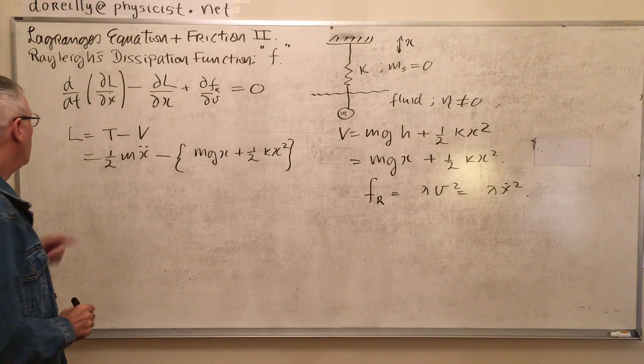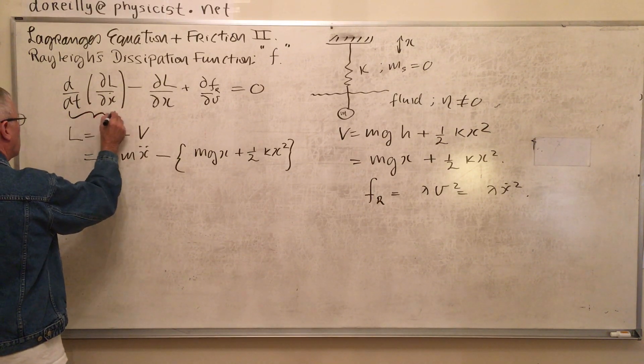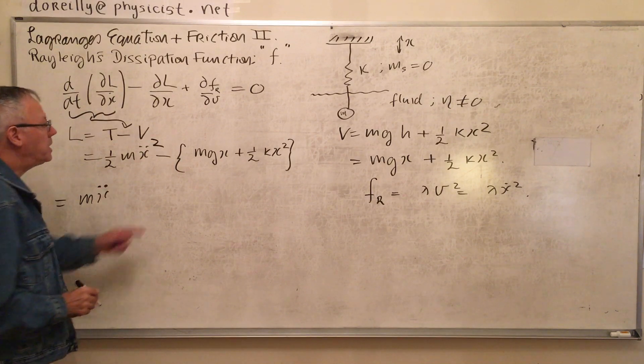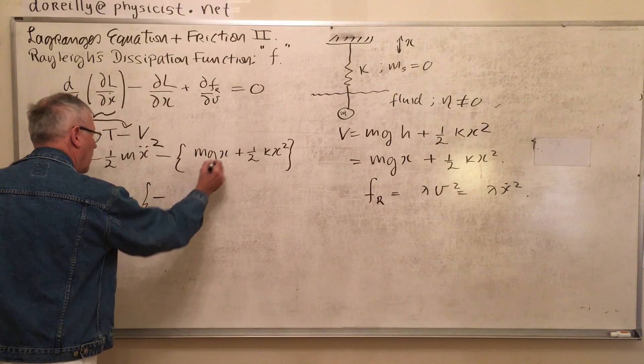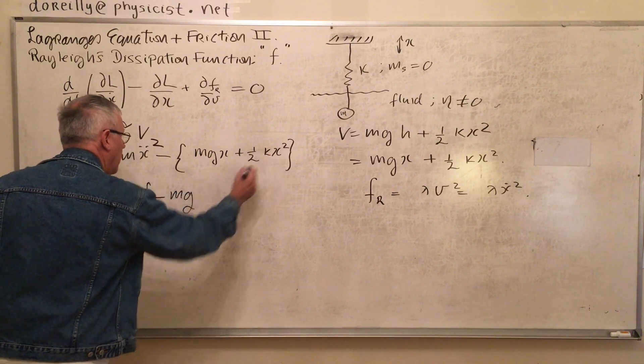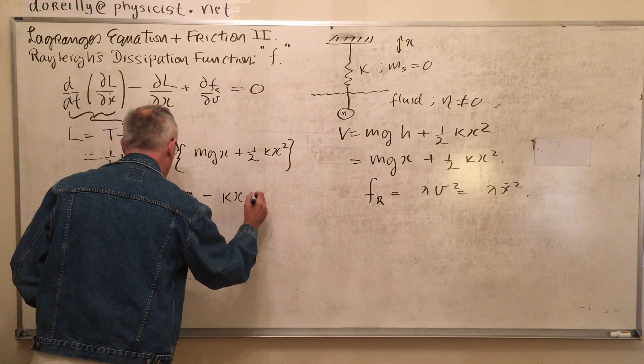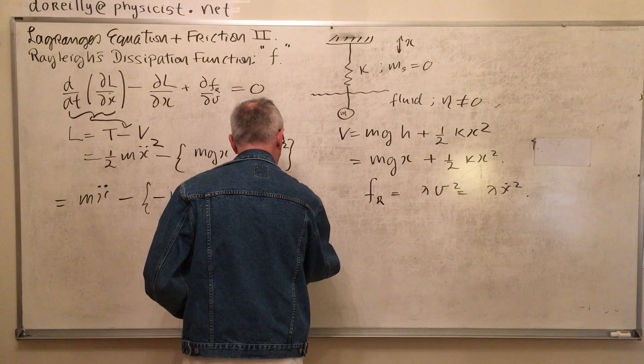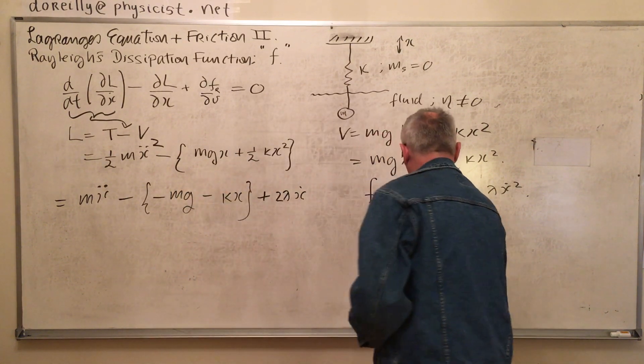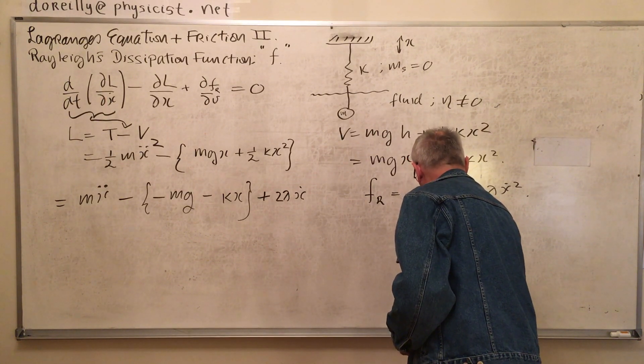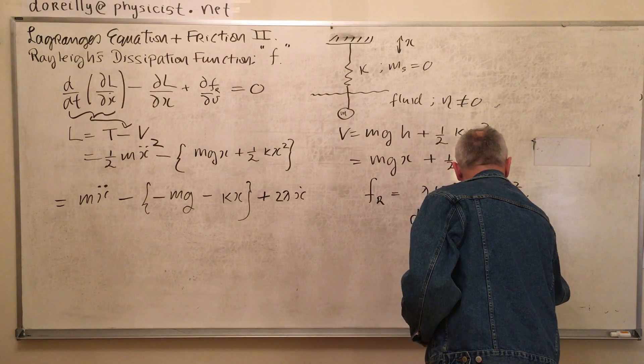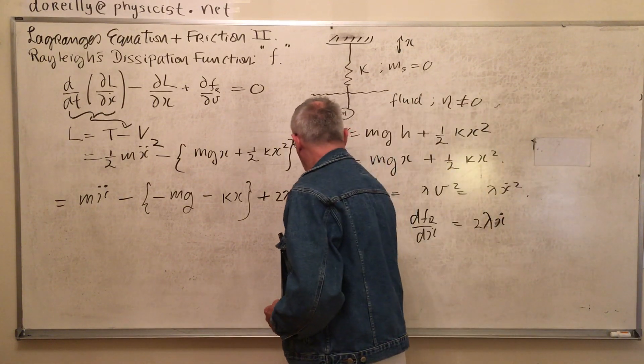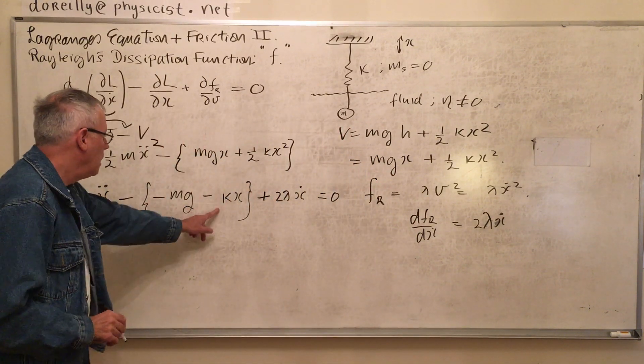So L equals T minus V. So let's set up Lagrangian's equation. Now, acting on x dot, I get the same thing as before. Minus dL by dx. Minus dL by dx here is mg with a negative sign. And here is k x. Now we add in Rayleigh's dissipation function. What we need is derivative. Just two lambda x dot so there's our equation.